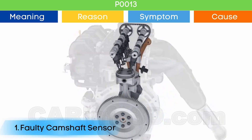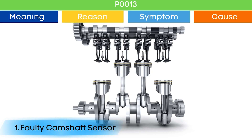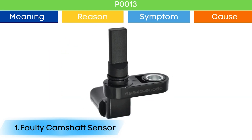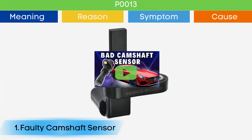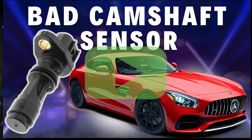Cause number one: bad camshaft position sensor. Due to a malfunction of the camshaft position sensor, the ECU may detect an engine timing error, which may trigger P0013 and other OBD-II codes related to camshaft position sensors, along with symptoms of a bad camshaft position sensor. Check our detailed video to learn more about the symptoms of a bad crankshaft position sensor and related OBD-II codes — link in the corner.